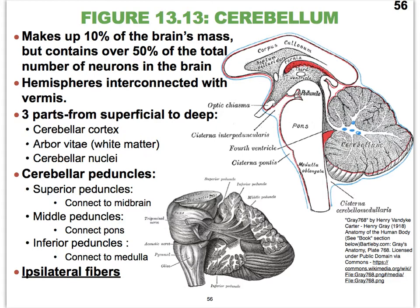Don't forget that the cerebellum nicely connects with all three sub-parts of the brain stem. We have our superior cerebellar peduncles that connect the cerebellum with the midbrain. We have our middle ones that connect the cerebellum with the pons, and the inferior ones connect to the medulla oblongata. Here you can see the cerebellar cortex as the most superficial layer, and then the white matter in the shape of a tree — the arbor vitae.